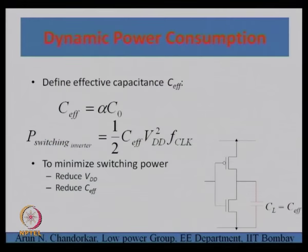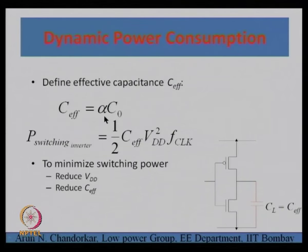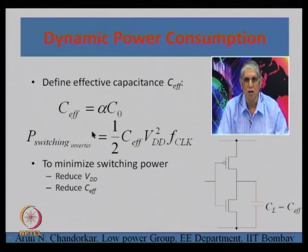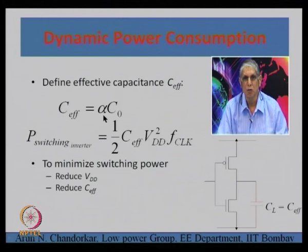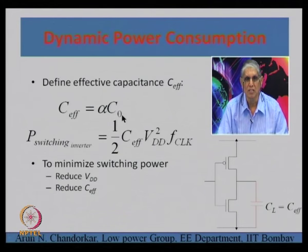Here is a figure showing dynamic power consumption. We define effective capacitance as alpha times C0, where C0 is the output capacitance at the node and alpha is called the activity coefficient. Alpha depends on the input change — whether it is 0 to 1, 1 to 0, or no change — as the data stream appears. Alpha essentially means how many times the capacitor charges or discharges in a cycle, taken care of through this factor called activity coefficient.